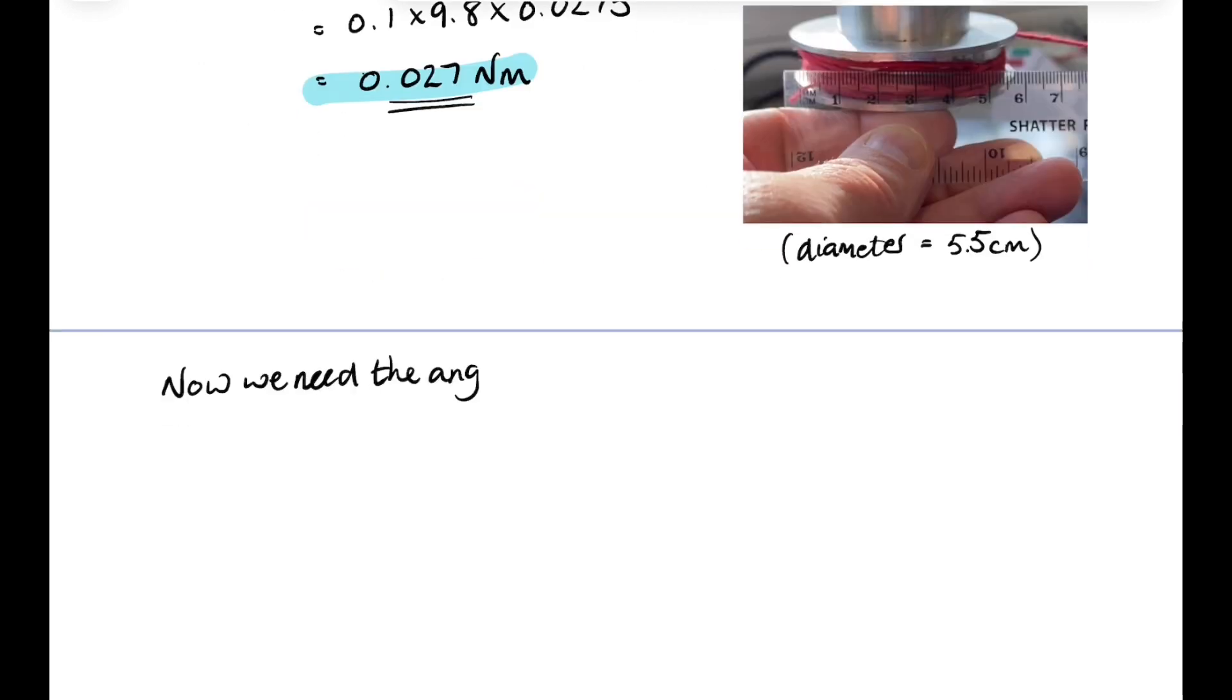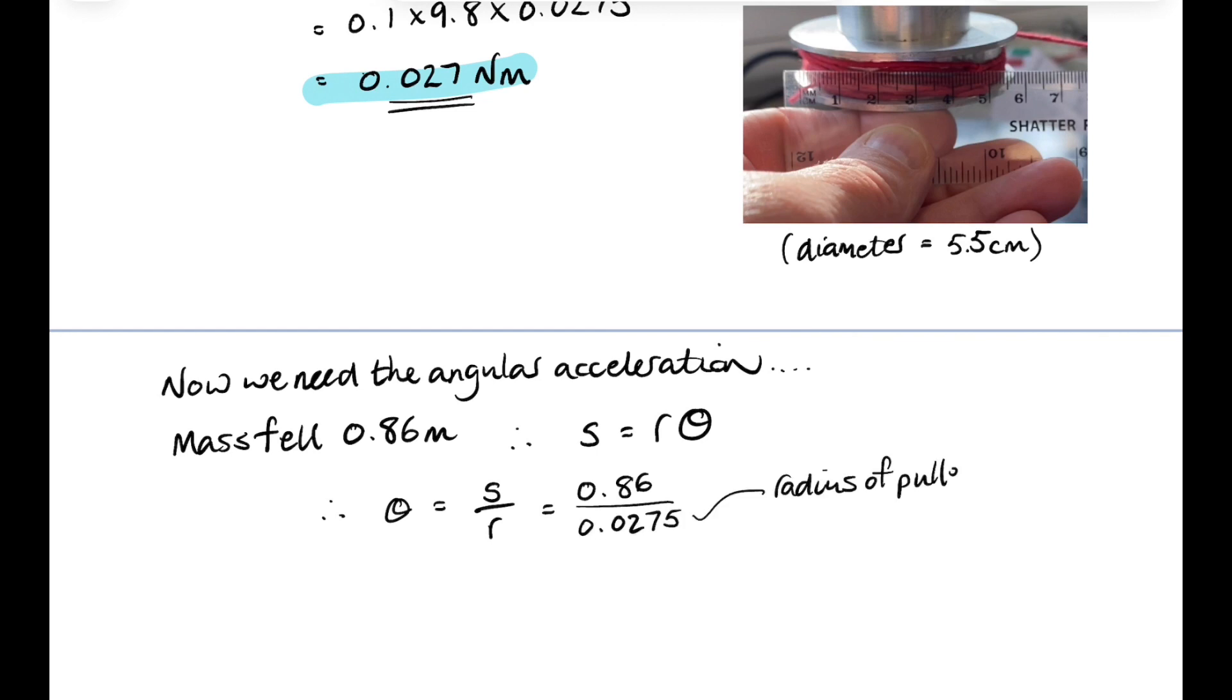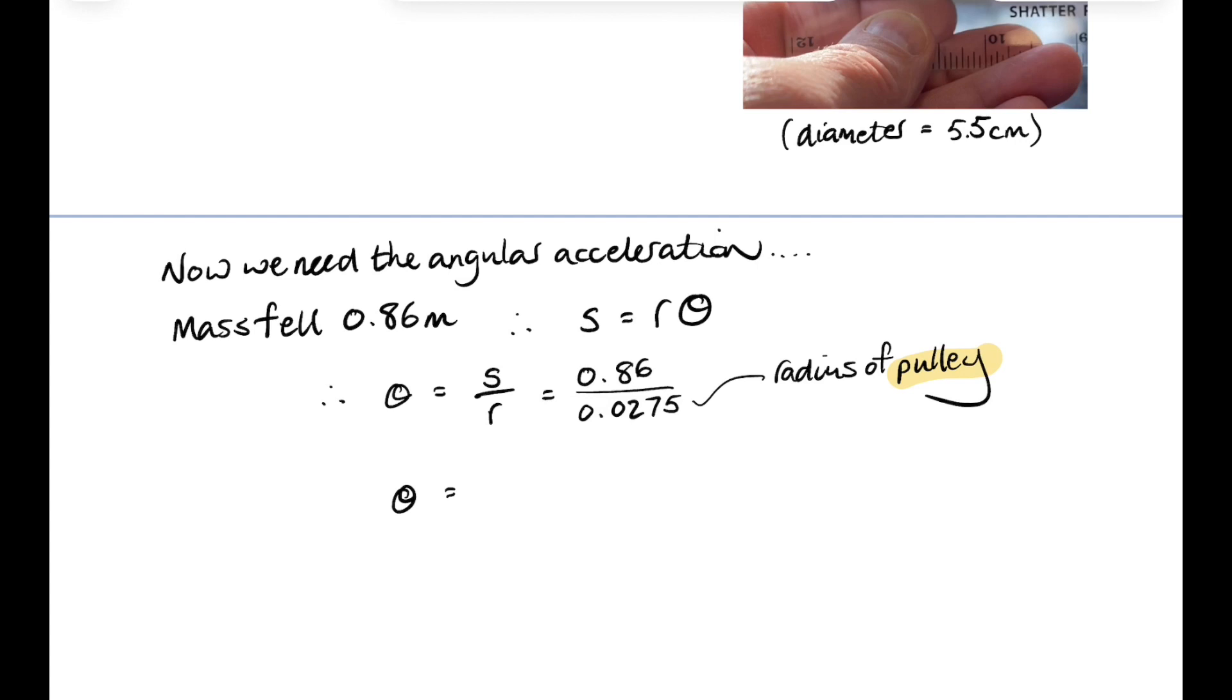Now, we need the angular acceleration as well. And we can work that out from the time it took for the mass to fall 0.86 meters. So that's a linear displacement. So we can work out its angular displacement from that. So theta is going to be equal to s over r. That's the 0.86 over the radius of the pulley. And that gives us an angular displacement of 31 radians.